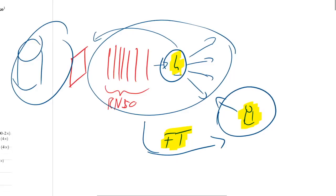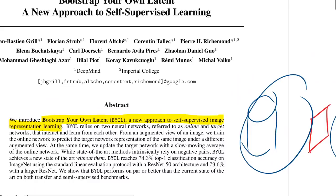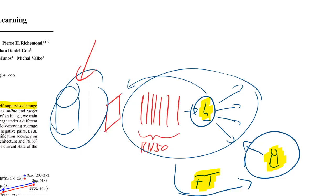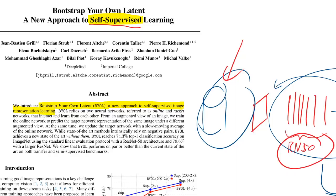The self-supervised part matters because representation learning can be as easy as using ImageNet — a million labeled images — to train your ResNet-50 to predict the class. That's supervised pre-training or supervised representation learning. It works well, but you need a labeled dataset. In self-supervised learning, you do not need labels.